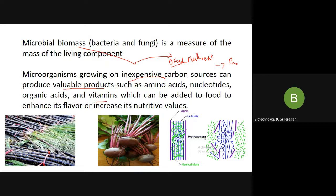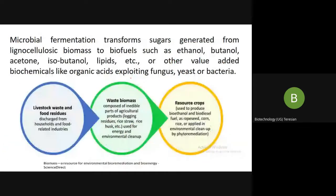These products can be added to food to enhance its flavor or increase its nutritive value. So you use microorganisms, provide inexpensive carbon sources as feedstock, and they produce a valuable by-product which can be edible. This microbial fermentation transforms sugars generated from lignocellulosic biomass to biofuels such as ethanol, butanol, acetone, isobutanol, lipids, or other value-added biochemicals like organic acids — exploiting fungi, yeast, or bacteria.